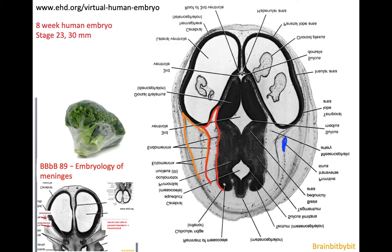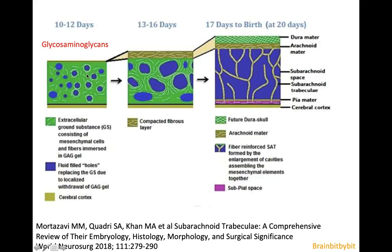To understand how arachnoid cysts form, you need to know about the embryology of the meninges, discussed in the previous video. This is a human embryo at week eight showing the neural tube with thick thalamic tissue bordering the third ventricle and thin neuroepithelium lining the lateral ventricles. The neural tube is enclosed by primitive meninges, which are quite thick and contain some vessels. The primitive meninges divide into the ectomeninges — giving rise to the skull and dura — and the endomeninges, which gives rise to the pia and arachnoid.